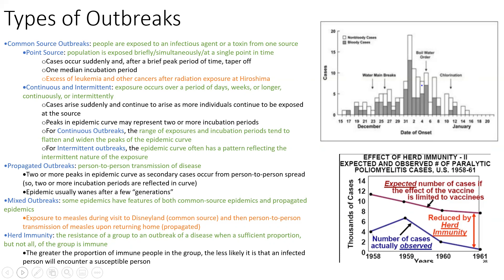An important concept you hear about in the news is herd immunity — when not everyone is immune to a disease, but so many people are immune that the disease has no leg room and dies out in that group. A great example is the effect of the polio vaccine: the actual number of cases is much lower than expected from vaccinated individuals alone, because of herd immunity.